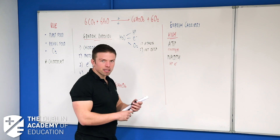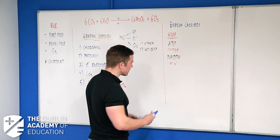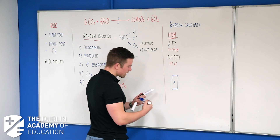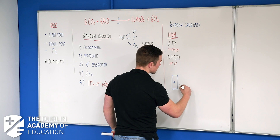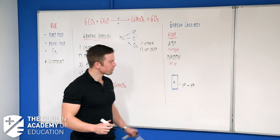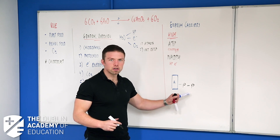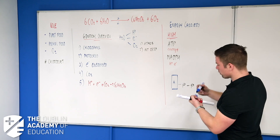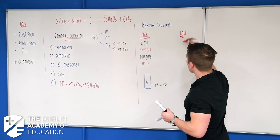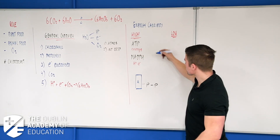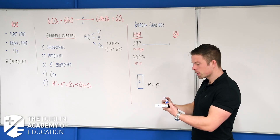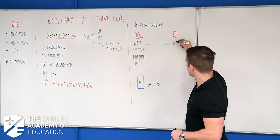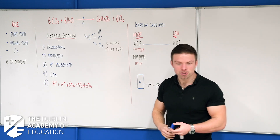ATP looks a little like this in terms of a diagram. It has an adenosine molecule — I'll just put A — and then it's got two phosphates joined onto that. That's adenosine diphosphate, not triphosphate. We also need to know the low energy version: when ATP uses up its energy, it becomes ADP — adenosine diphosphate — and the energy goes away.